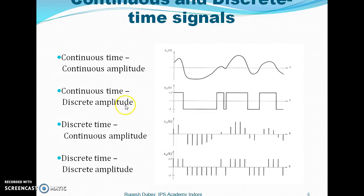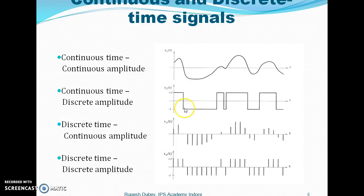Now we have continuous time, discrete amplitude. Discrete amplitude means fixed amplitude — plus 1 and minus 1 are two discrete amplitudes. But the time is continuous. Continuous time means the signal is available for the entire time axis; you name any time instant and we can tell you the voltage.